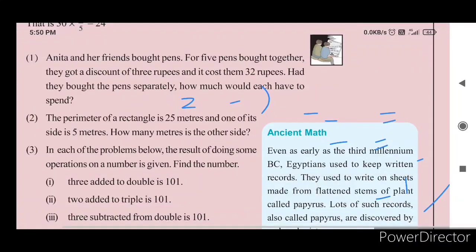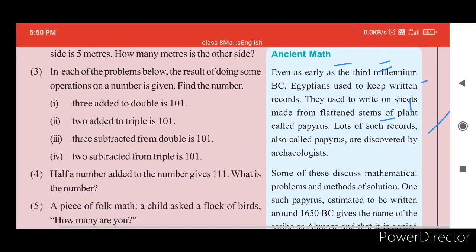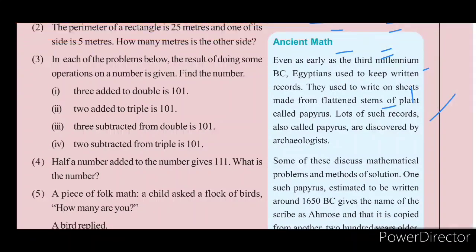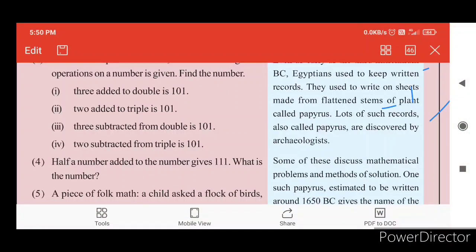In each of the problems below, the result of doing some operation on a number is given. Find the number. Problem: 3 added to double a number is 101.